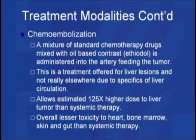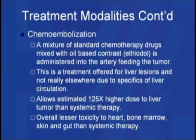The treatment is usually performed in a lobar fashion, treating about half the liver at a time, to minimize overall chemical irritation in the liver. This is possible because of the specifics of liver circulation — tumors tend to be supplied by the artery, whereas the normal liver is more dependent on portal vein flow. This allows us to selectively insult the tumor's blood supply without insulting the normal liver supply to the same degree. It's estimated that this allows between 100 and 125-fold higher dose to the liver tumor than what can be accomplished by IV chemotherapy. The overall lesser toxicity to the rest of the body is accomplished by getting this medication to the liver and keeping it there, so that exposure to heart, bone marrow, skin, and gut is minimized.